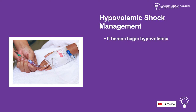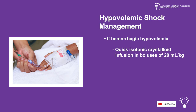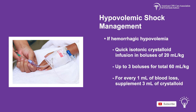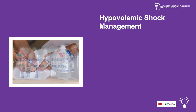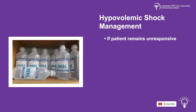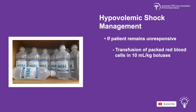If the child shows signs of hemorrhagic hypovolemic shock, start with a fast infusion of isotonic crystalloid in boluses of 12 ml per kg and give up to 3 boluses for a total of 60 ml per kg. For every 1 ml of blood loss, it is important to supplement 3 ml of crystalloid in the initial treatment. If the patient remains unresponsive, then consider a transfusion of packed red blood cells in 10 ml per kg boluses.